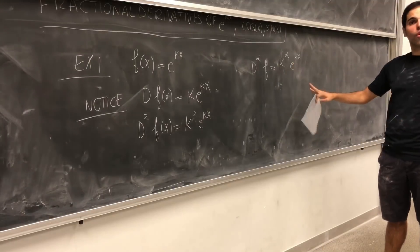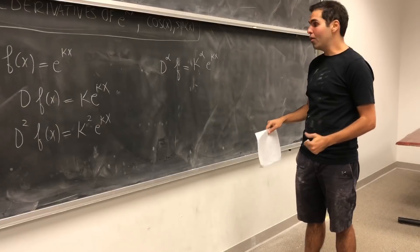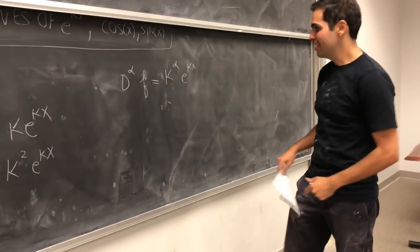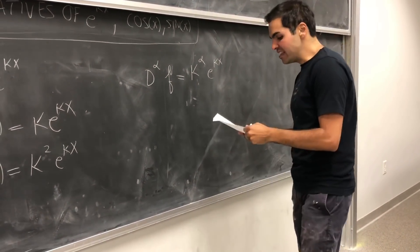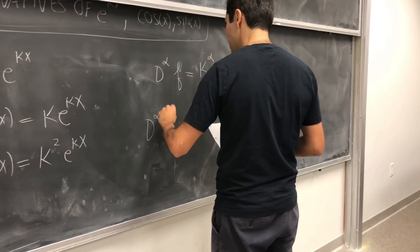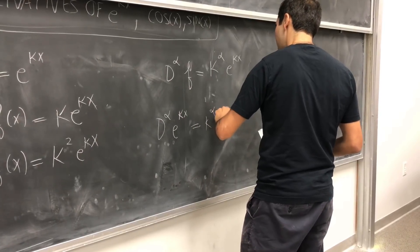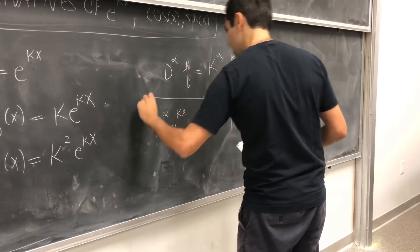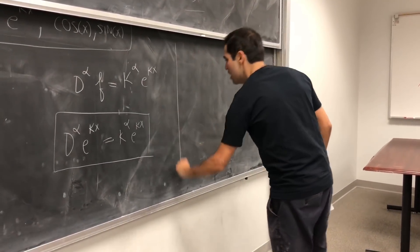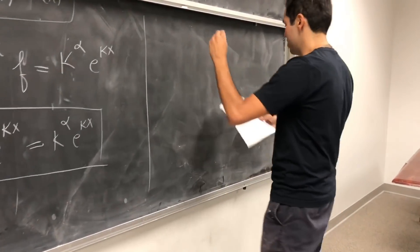And the cool thing is, it's true not only for 1/2, but also for alpha real, 1/3, square root of 2, irrational values, and also imaginary values and negative values. So just to summarize, the alpha derivative of e^kx is k^α · e^kx. In fact, some people could just say this is a definition of the fractional derivative. But let's see if that makes sense in terms of the things we talked about before.